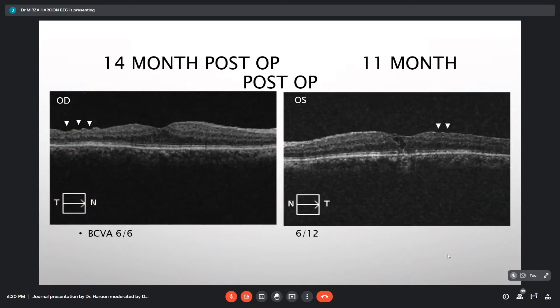Then he presented after 1 year. These inner retinal dimples were seen more prominently at this visit, but the visual acuity was not getting hampered. The visual acuity was 6/6 in the right eye, 6/12 in the left eye.